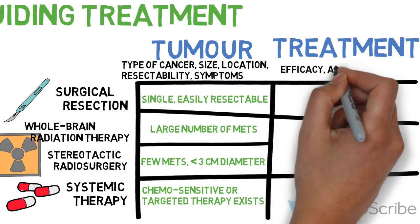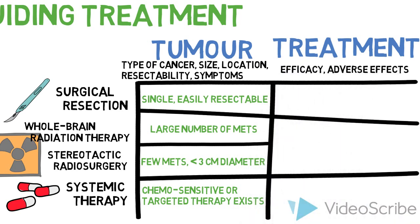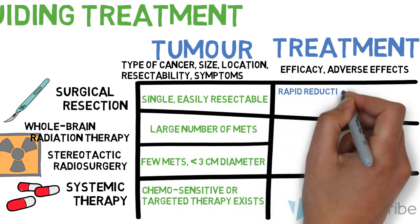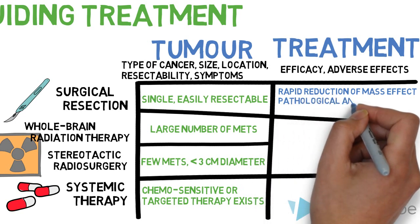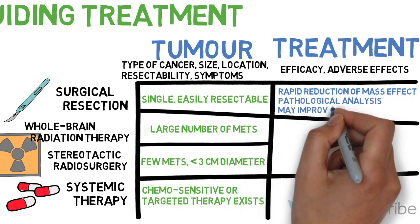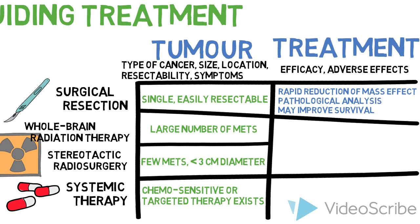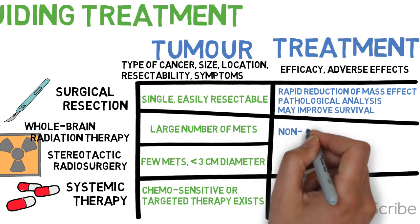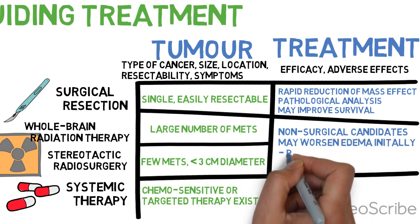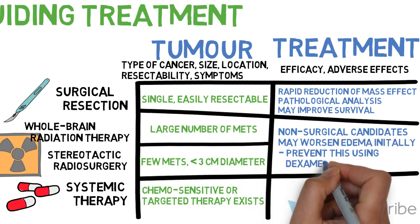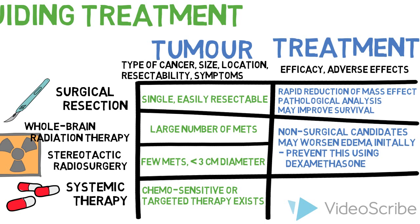Treatment factors to consider include the efficacy and adverse effects of each therapeutic option. For example, surgery provides rapid reduction of mass effects, allows for pathological analysis if the diagnosis is uncertain, and may improve survival in selected patients with good performance status and prognosis. Radiation therapy can be used in patients with poor prognosis to improve symptoms, but can worsen edema initially. Therefore, corticosteroids such as dexamethasone can be considered to prevent this.